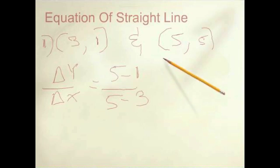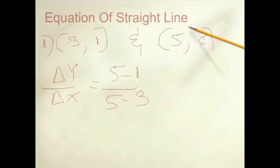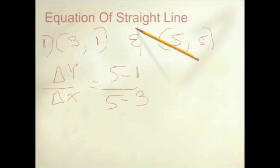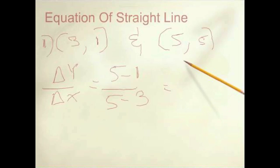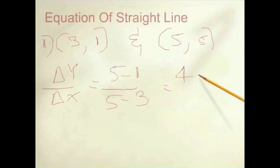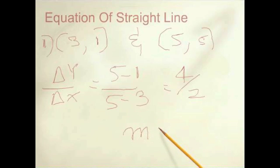minus 3. Notice I chose (5,5) to be (x2, y2) and (3,1) to be (x1, y1) — my bad. And when you solve this you get your slope to be 4 over 2, or simply m, which represents the slope, equals 2.